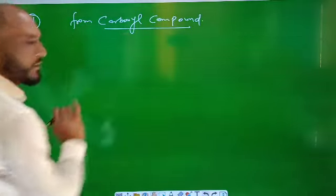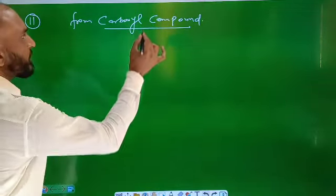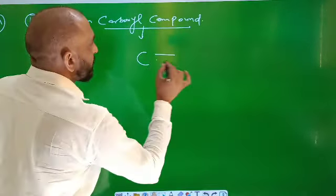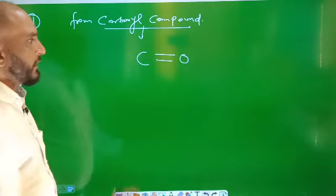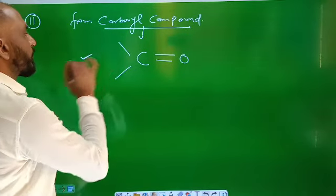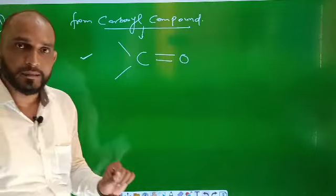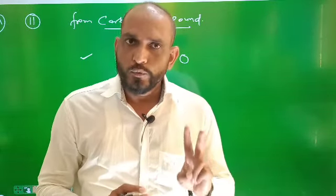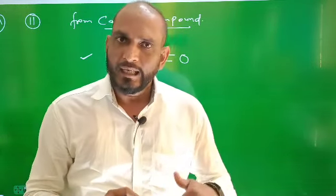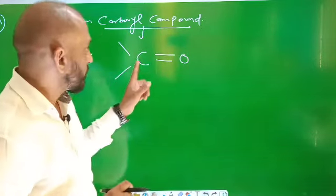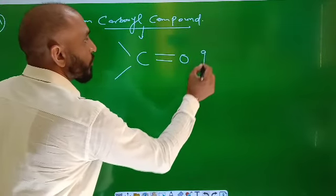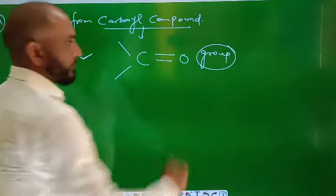Which compounds are carbonyl compounds? The definition of a carbonyl compound is: if a carbon atom is attached to an oxygen atom with a double bond and two valences of that carbonyl carbon are free, then it is called a carbonyl group. It is not a compound by itself — it is only a carbonyl group.